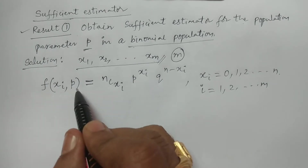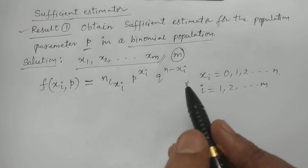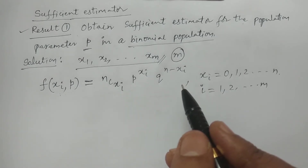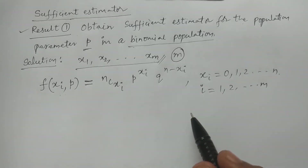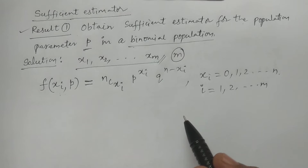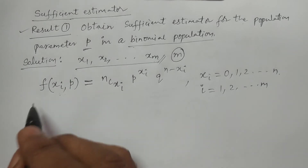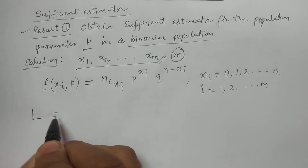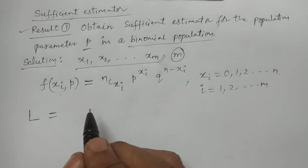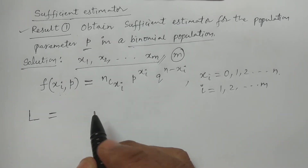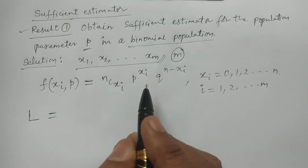For x1: f(x1, p); for x2: f(x2, p); for xm: f(xm, p) — there are m functions for all observations x1, x2, ..., xm, which follow the binomial distribution. By using Neyman's factorization theorem, we calculate the sufficient estimator. First, I calculate the likelihood function L, which is the joint density function of x1, x2, ..., xm.